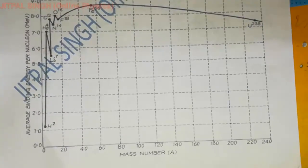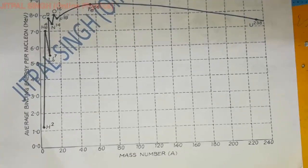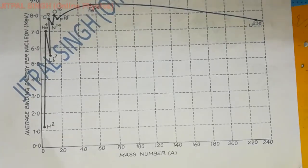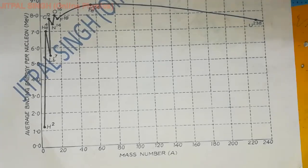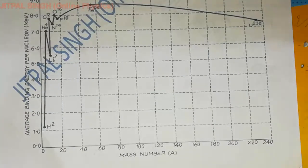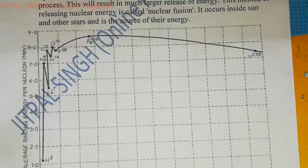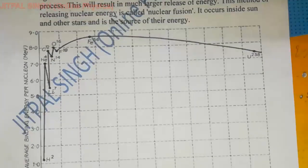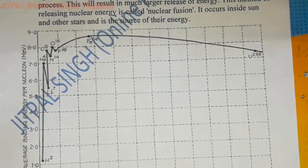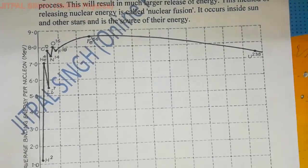I hope why fission and fusion takes place and the binding energy curve is clear to everyone. This finishes the theory of the chapter, and in the next video I will continue with the numerical portion.